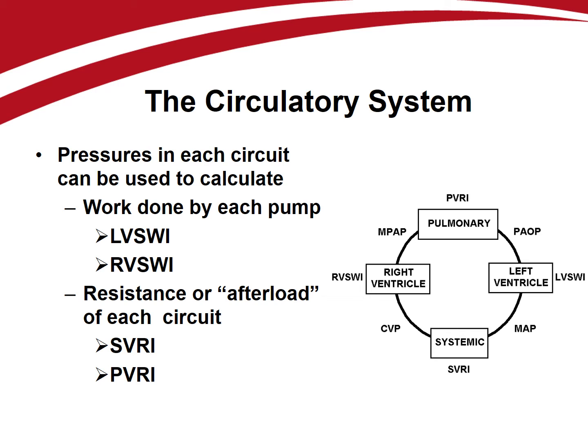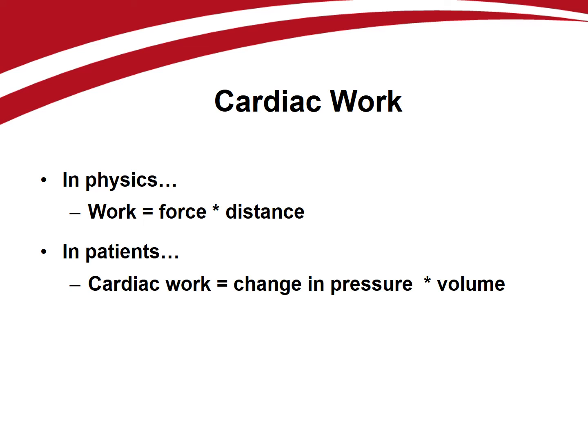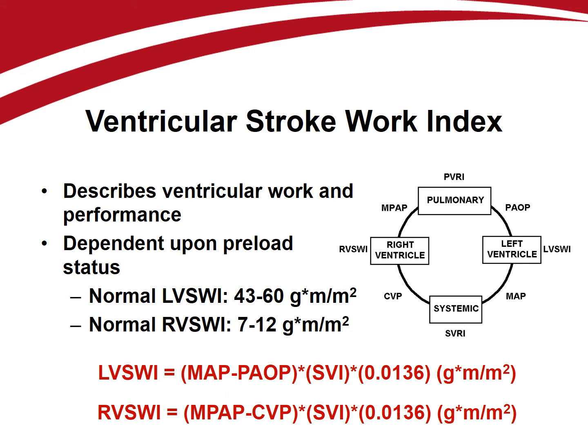The vascular resistance indices can be used to answer the third of the primary hemodynamic monitoring questions: what is the patient's afterload? After all those physics classes, you really only need to remember two equations. The first is work equals force times distance. We can use this in patients to calculate the work done by each pump. The force is the change in pressure generated by the pump, while the distance is the volume of blood moved. For the left ventricle, work equals the change in pressure — mean arterial pressure minus pulmonary artery occlusion pressure — times the stroke volume index. To make the units work out right, we use a correction factor of 0.0136.